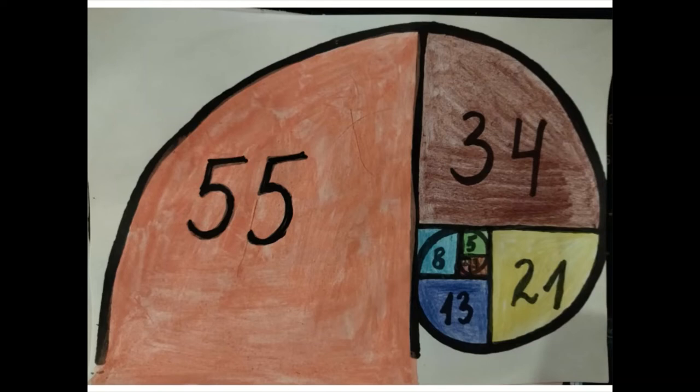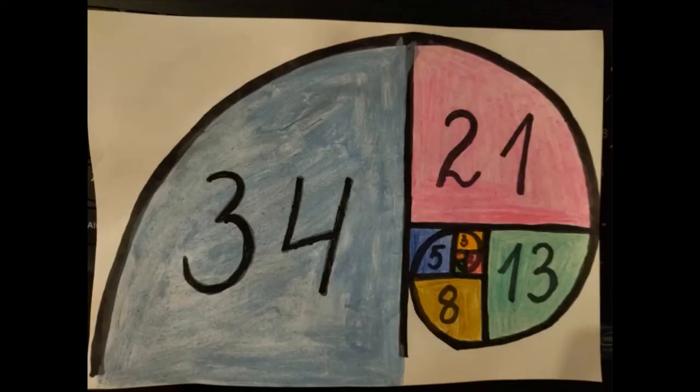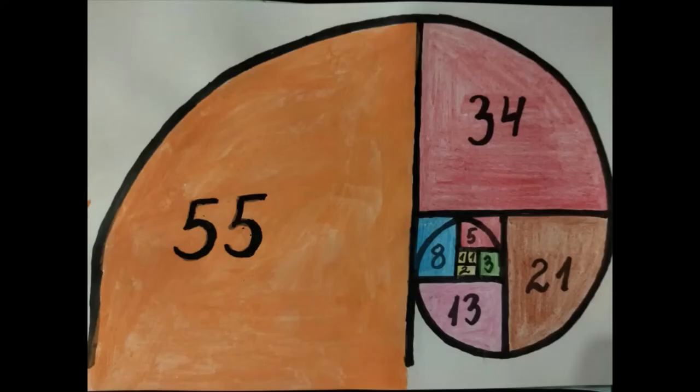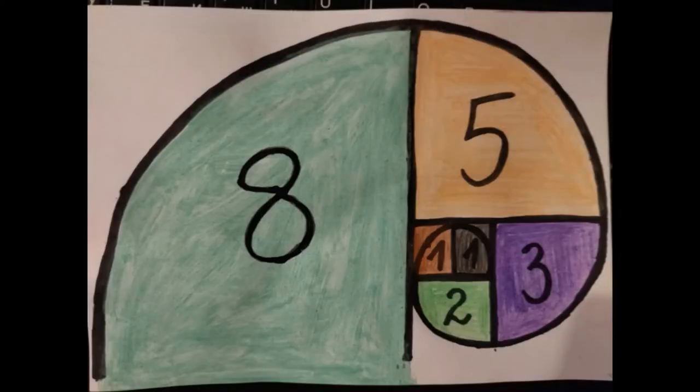Fibonacci numbers are strongly related to the golden ratio. Binet's formula expresses the nth Fibonacci number in terms of n and the golden ratio and implies that the ratio of consecutive Fibonacci numbers tends to the golden ratio as n increases. The Fibonacci numbers are also closely related to Lucas numbers, which obey the same recurrence relation and with the Fibonacci numbers form a complementary pair of Lucas sequences.